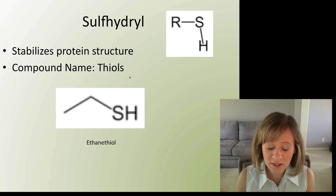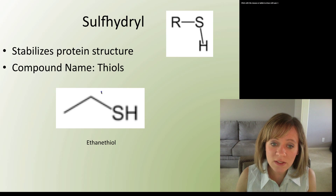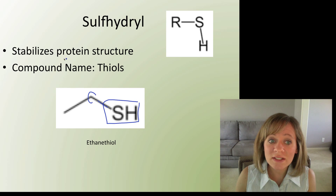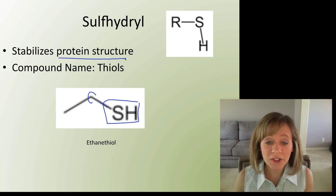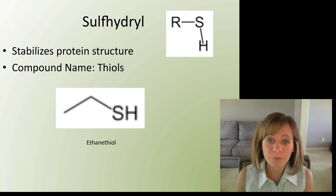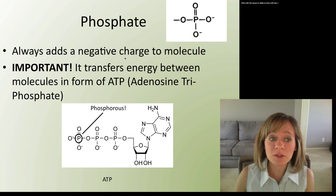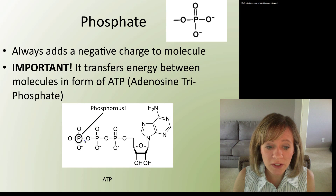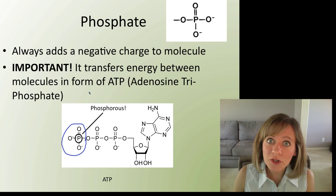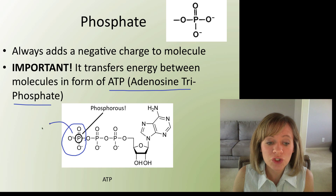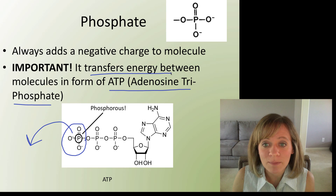Next is the sulfhydryl group, also called thiols — simply a carbon bonded to an SH. This stabilizes many different protein structures, and we're going to see sulfhydryls and disulfide bridges when we look at proteins in the next video. The phosphate group is one of the most important: a phosphorus double bonded to an oxygen, with two additional oxygens. This is a critical part of ATP, the energy molecule of life. The phosphate group is what gets transferred when we transfer energy between molecules — so energy and negative charge are two key properties to understand.